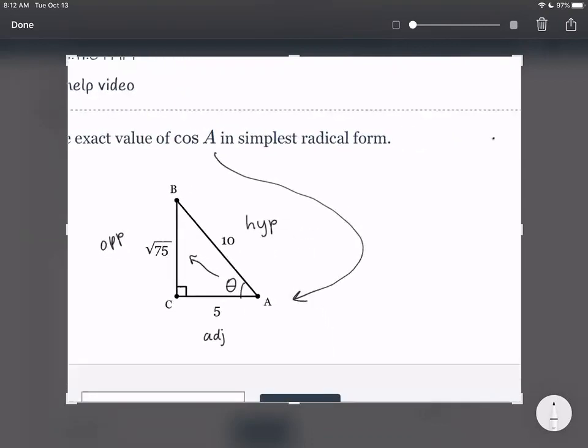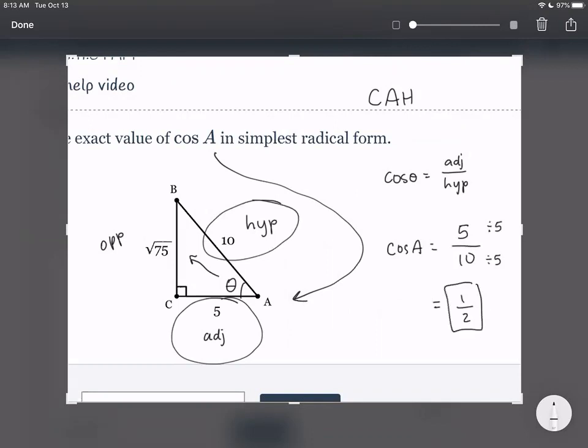Now we're doing cosine. So according to SOHCAHTOA, the CAH, which stands for cosine is equal to adjacent over hypotenuse. So then if we're talking about cosine of A, we have the adjacent over the hypotenuse. And we should simplify this. So 5 over 10. If you divide the top and bottom by 5, which is our greatest common factor, then we would get one half, which would be our final answer.